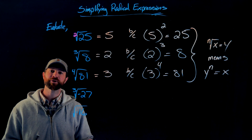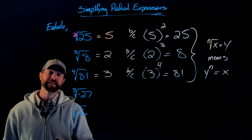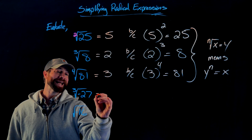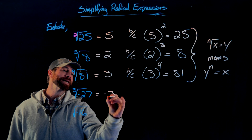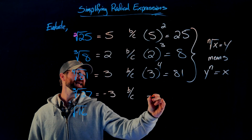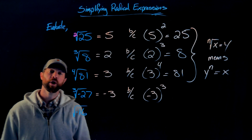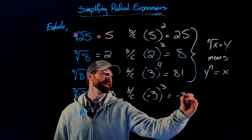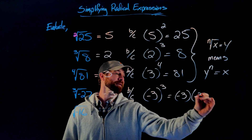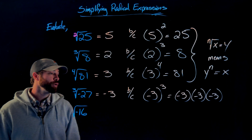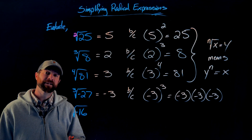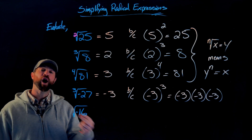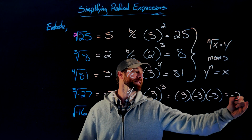Now let's talk about applying radicals to negative numbers. The cube root of negative 27 is negative 3, because negative 3 raised to the third power gives us negative 27. Expanding: negative 3 times negative 3 times negative 3 — since we have an odd number of negatives, we do end up with negative 27.